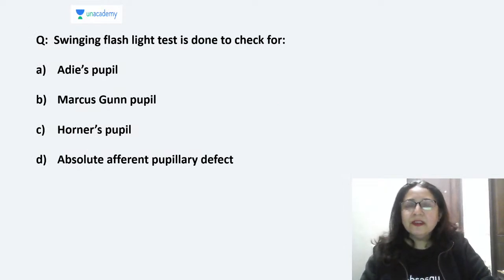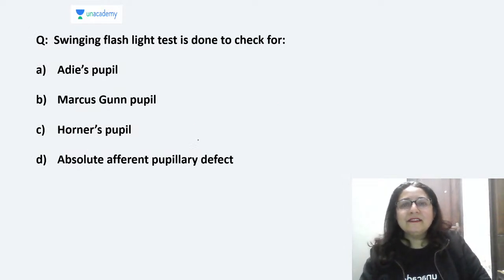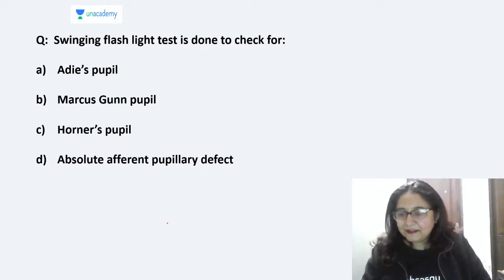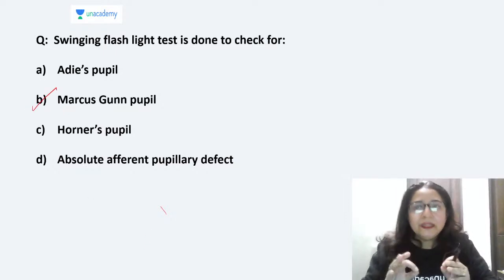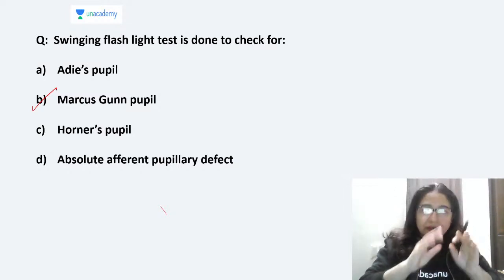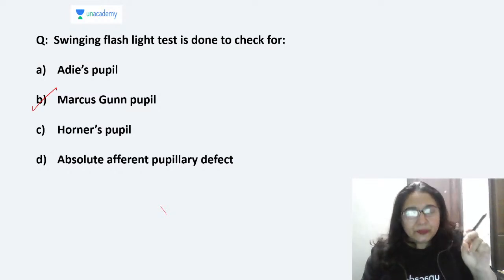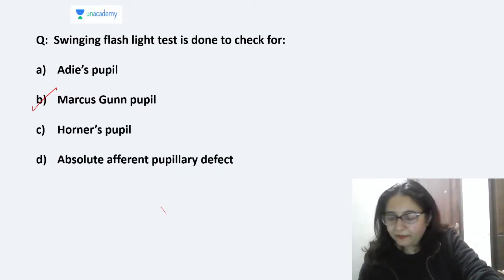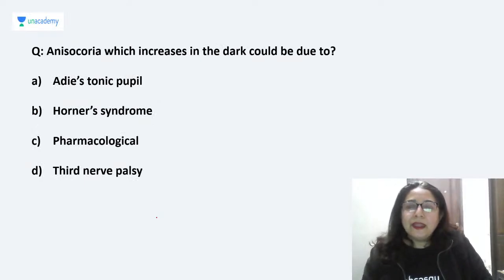MCQ: Swinging flashlight test is done to check for — Adie's pupil, Marcus Gunn pupil, Horner's pupil, or absolute efferent pupillary defect? The answer is Marcus Gunn pupil (RAPD). There is no need to use swinging flashlight for absolute APD, because in absolute APD the direct reflex is completely absent in the involved eye.